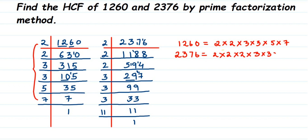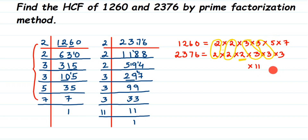Now we identify the prime factors present in both numbers by circling them. The first 2 is common to both; the second 2 is also common. The third 2 in 2376 has no matching 2 in 1260, so we leave it. Next, one 3 is common and another 3 is common. The remaining 3 in 2376 has no pair. The factors 5 and 7 from 1260 and 11 from 2376 are not shared, so we leave those out.